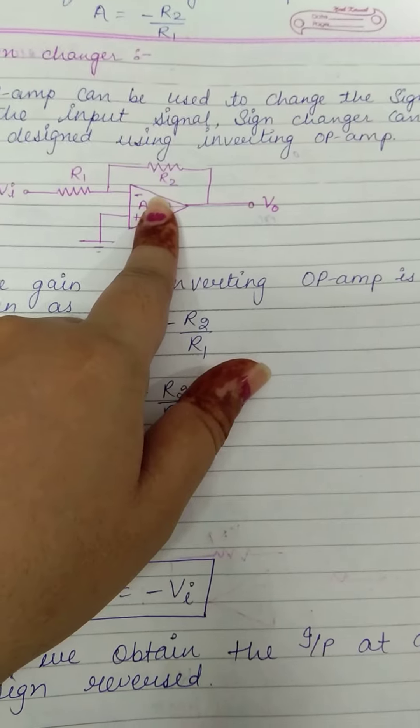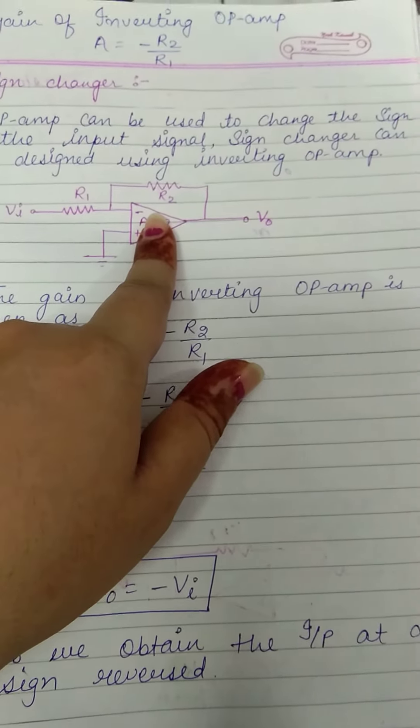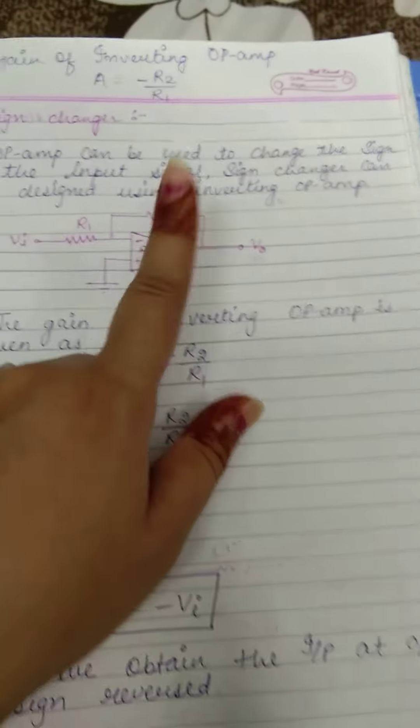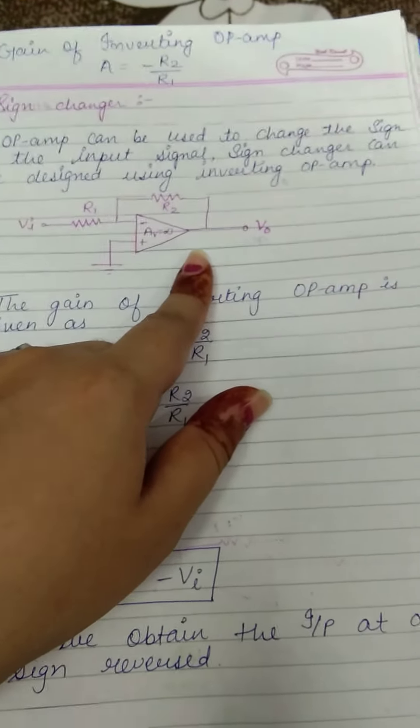Because our gain is very high, we have to use negative feedback, and here we have to use voltage shunt feedback.